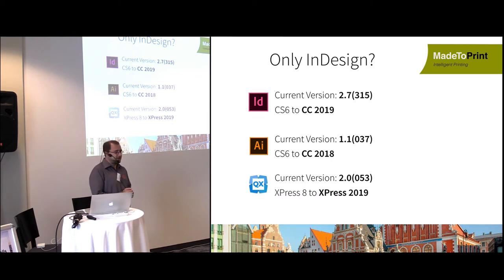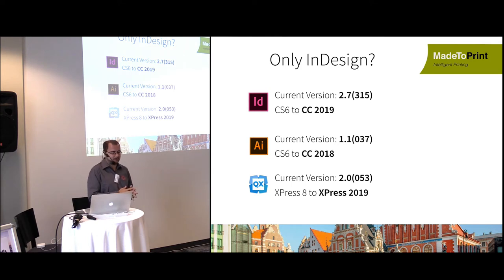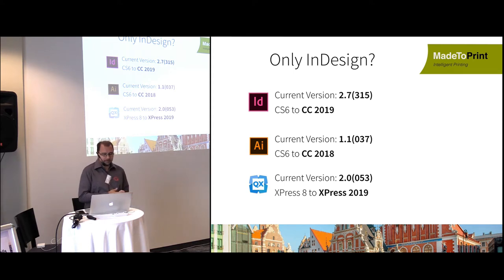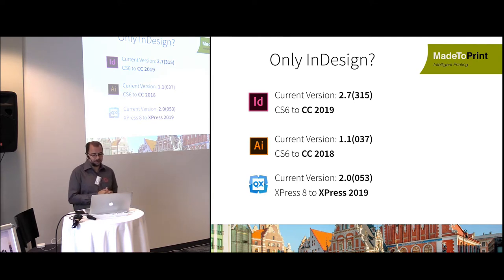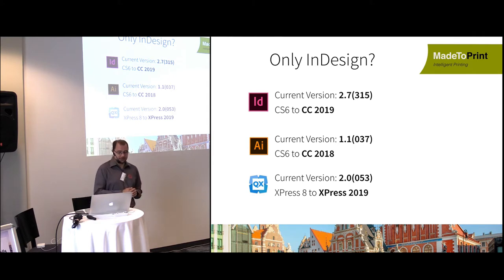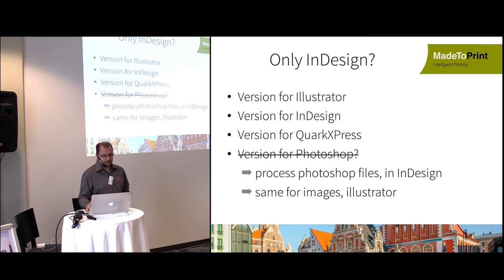Made to Print is not only for InDesign. The main product line is for InDesign and InDesign Server — current version is 2.7315, available for CS6 to CC 2019. There are also versions for Illustrator (CS6 to CC 2018, version 0.3.7) and for QuarkXPress up to QuarkExpress 2019.